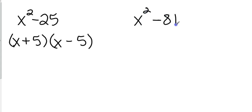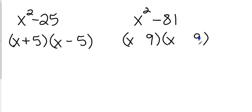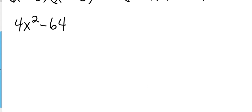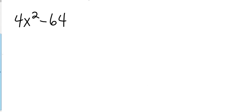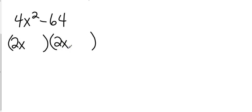They're all the same process: determine if it's a difference — yes, it's subtraction. Are they squares? Yes. So two sets of parentheses, take the square root of the first, take the square root of the second, and it's plus and minus — works every time. Let's go a little further: 4x squared minus 64. Is 4x squared a perfect square? Yes. Is 64 a perfect square? Yes. Is this a difference? Yes. So take the square root of 4x squared, which is 2x, and the square root of 64, which is 8, and it's plus and minus.